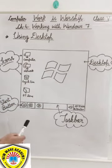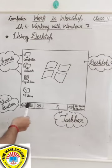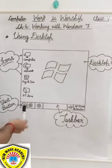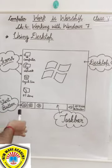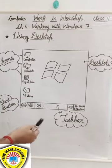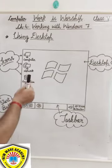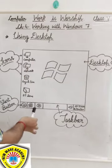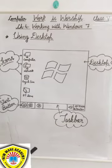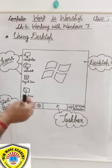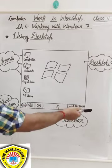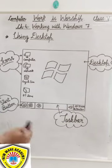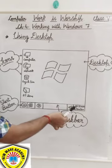You will find the taskbar at the bottom of the desktop screen. The taskbar displays the Start button on the left side. The programs that you have opened appear in the form of buttons on it. It also holds the notification area on the right side, which includes a clock and some icons.